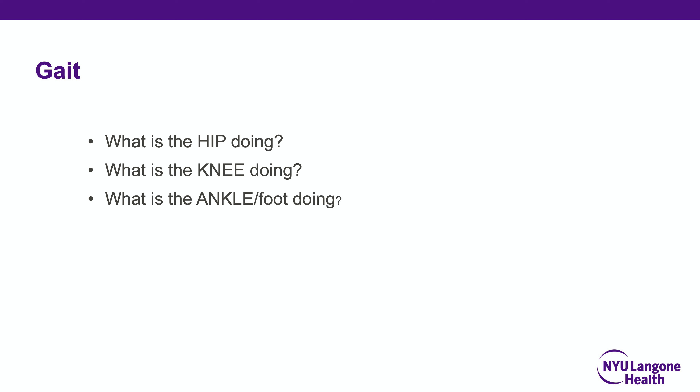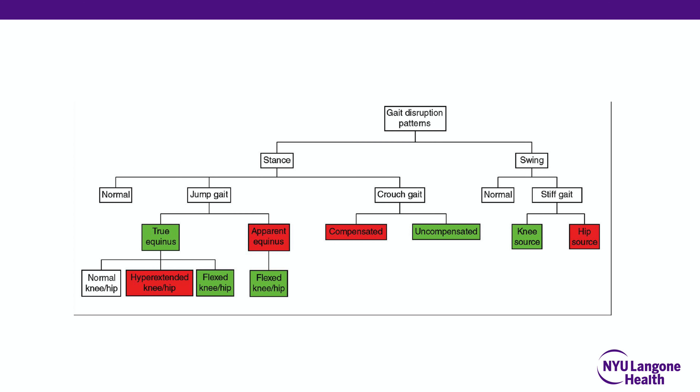For gait analysis, ask: what is the hip doing, the knee, and the ankle? It is important to differentiate true equinus from apparent equinus. True equinus is an isolated abnormality in foot position relative to the tibia — no hip or knee involvement, characterized by absence of heel strike, common in hemiplegics. In apparent equinus, foot position relative to the tibia is actually normal, but heel strike doesn't occur because of proximal contracture at the hip or knee.